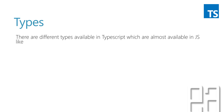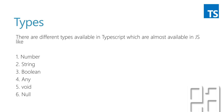Types in TypeScript. There are different types available in TypeScript which are almost available in JavaScript as well — things like number, string, boolean, any, void, and null. These are the different kinds of types available in TypeScript. These types are self-explanatory except the any type, which can be used if you don't really know what type something is — that's why it is called the any type.